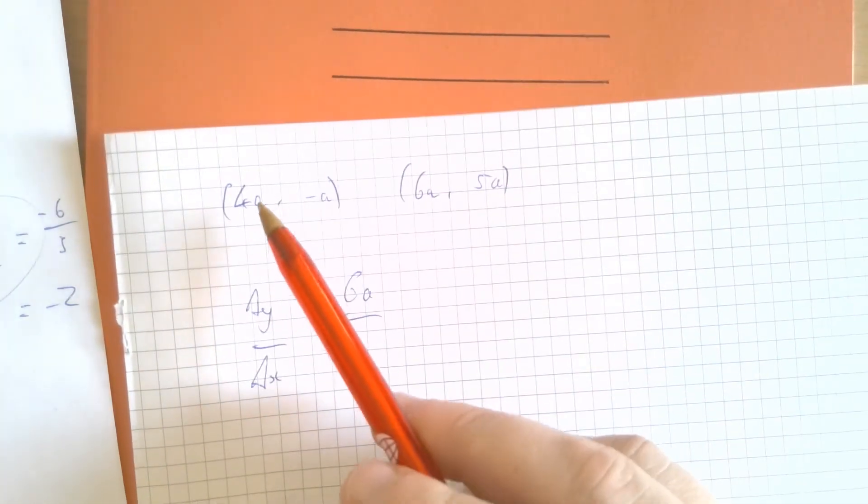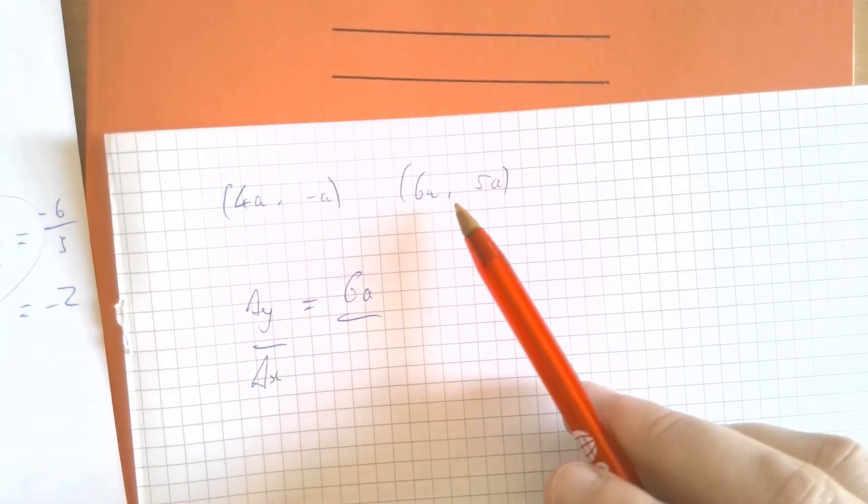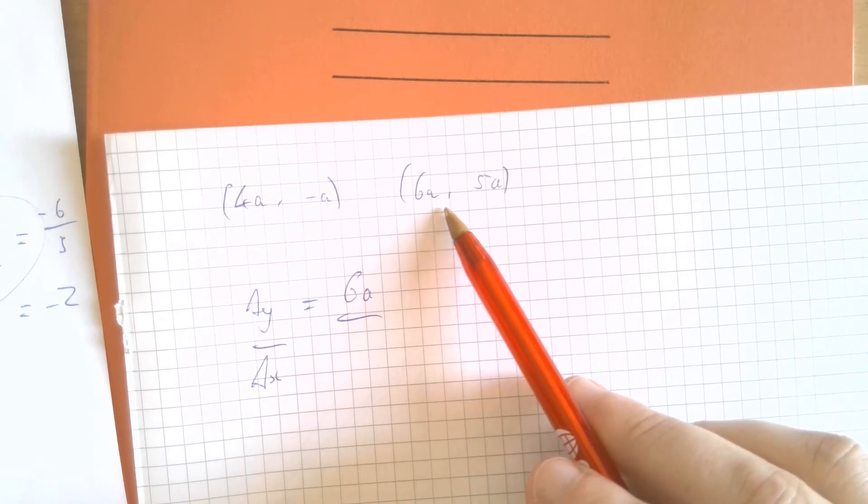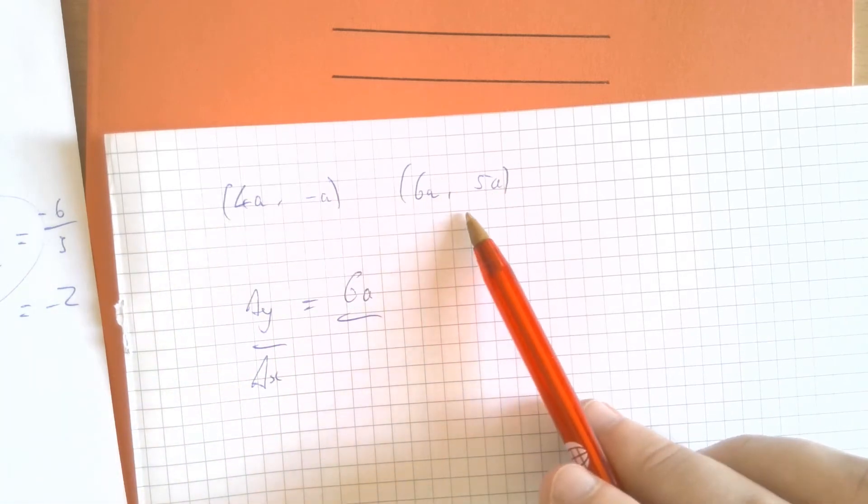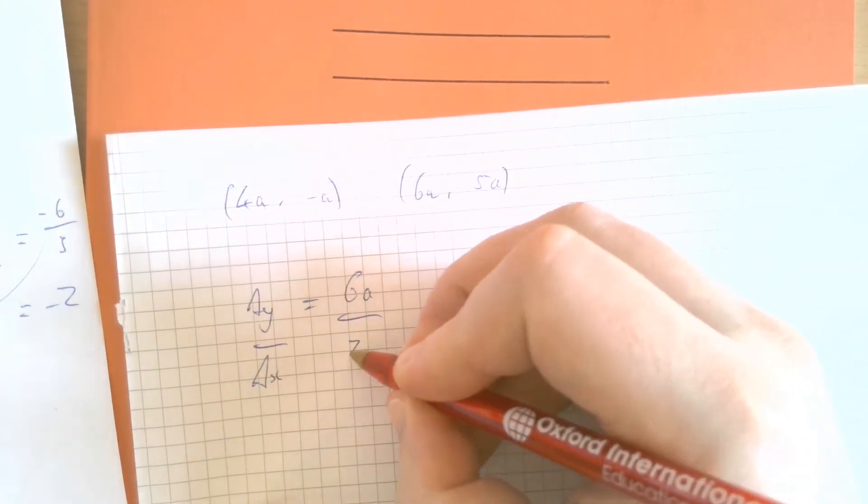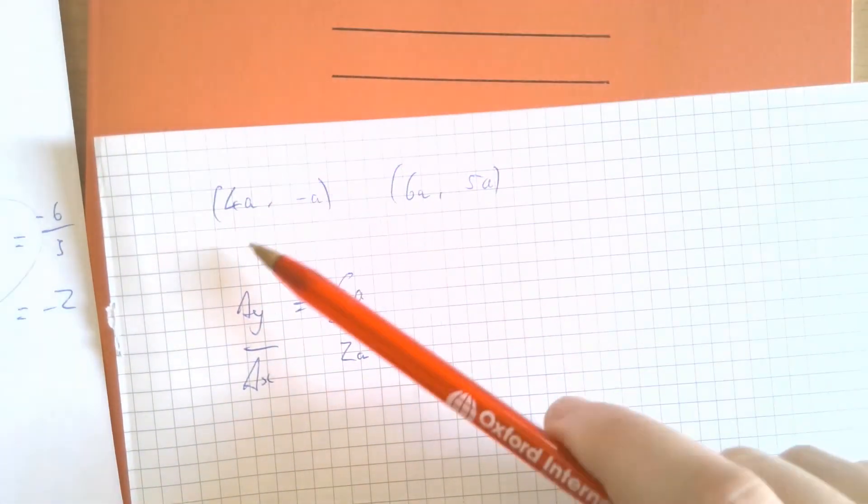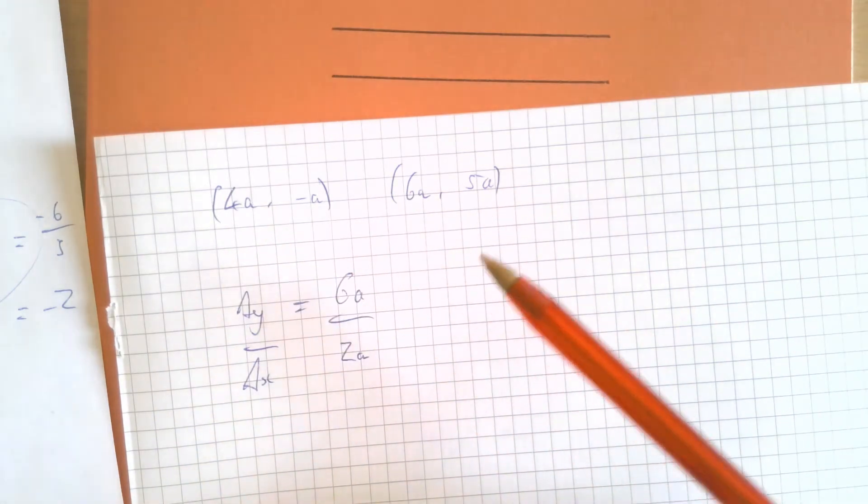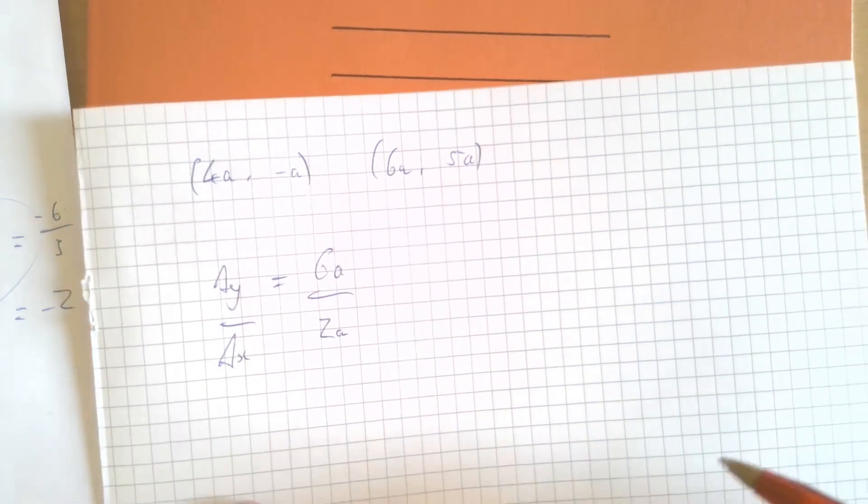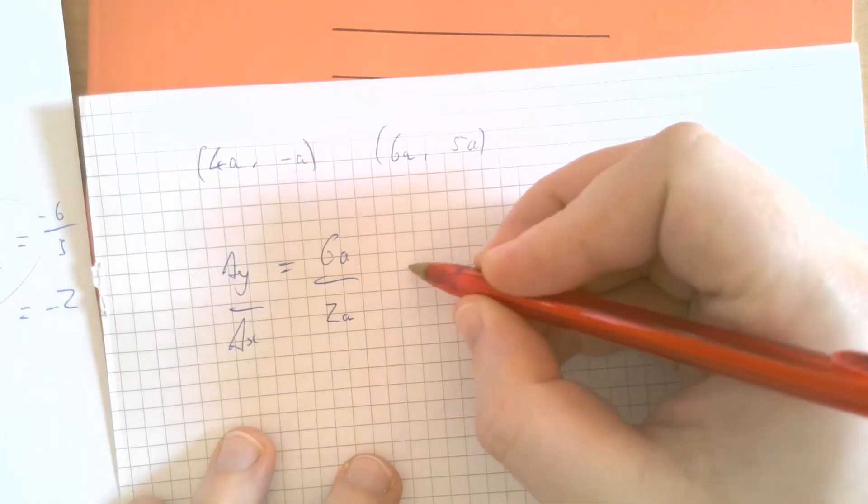The change in x: 4a is increasing to 6a. That's going up by 2a. If you need to practice collecting like terms, working with algebra to get those differences, then that's fine. That's something that you'll need to do, and that's okay. You can spend some time doing that.